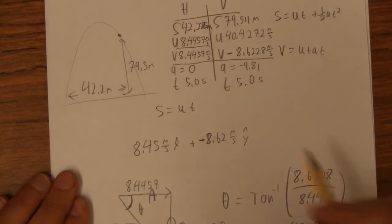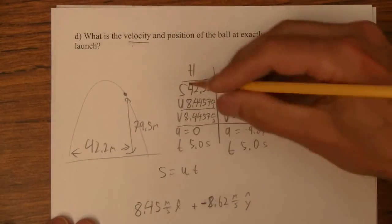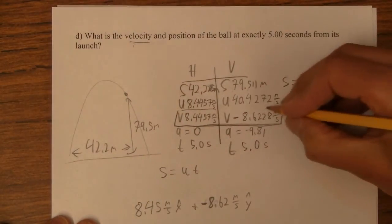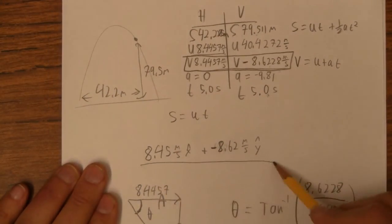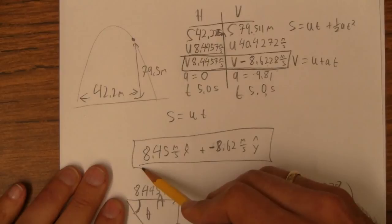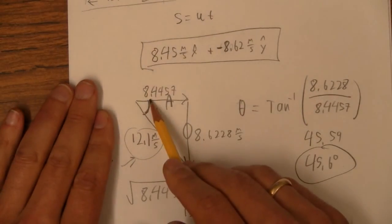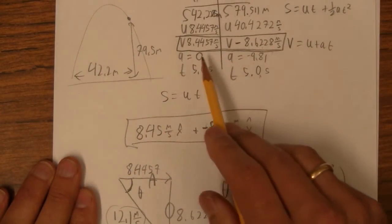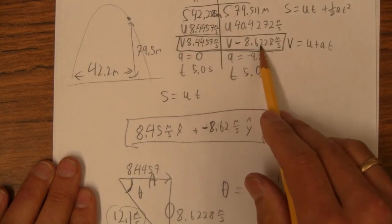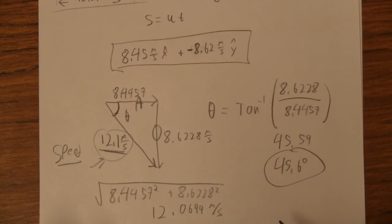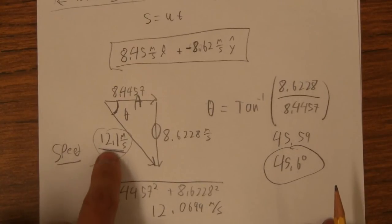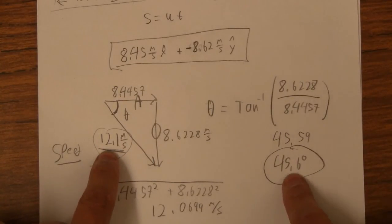So if they ask for the velocity at 5 seconds, we take the components and either write it as a component vector or draw the picture — over 8.4457 and down 8.628, find the hypotenuse for the speed, and find the angle to get the angle-magnitude vector. The final answer is 12.1 meters per second at 45.6 degrees below horizontal.